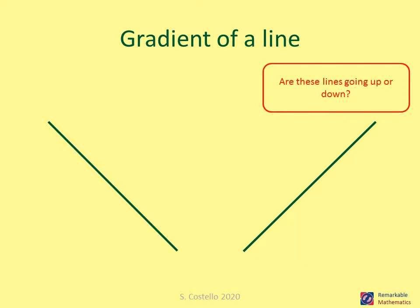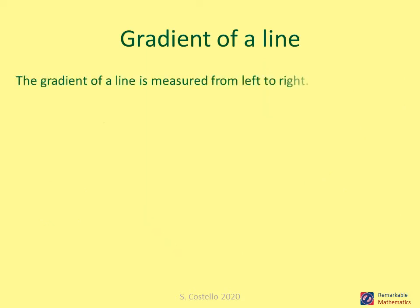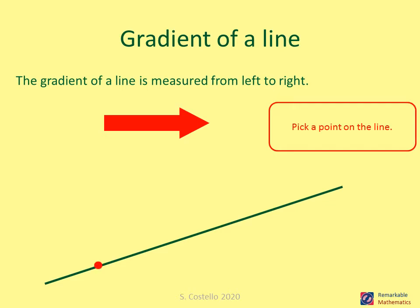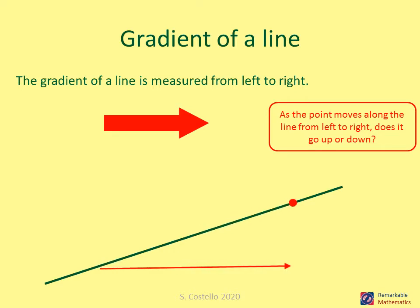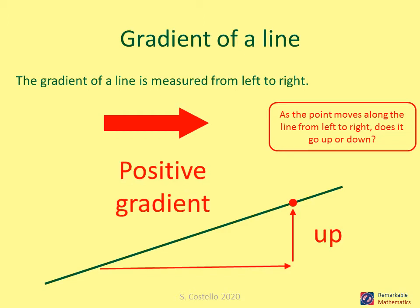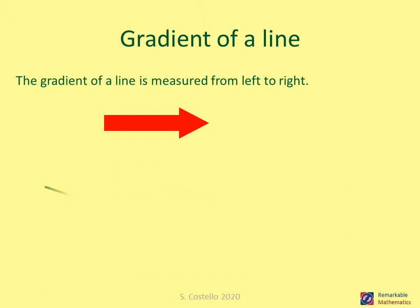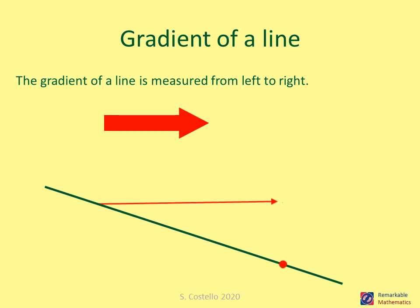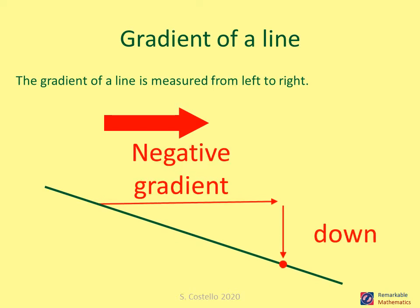Here we have two lines. Are the lines going up or down? This line is going down and it's said to have a negative gradient. This one is going up and it has a positive gradient. The gradient of a line is measured from left to right. As the point moves along the line from left to right, if it goes up it's a positive gradient; if it goes down it's a negative gradient.